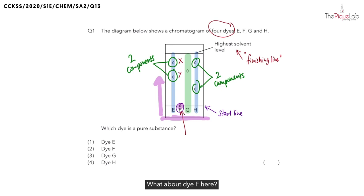What about dye F here? It is only one dot. Does that mean that it is only made up of one component? No. If you notice that the dot, it is still on the start line. Has it moved up together with the solvent? No, it has not moved up. This is similar to a runner that has not run in the race and just stayed at the start line.